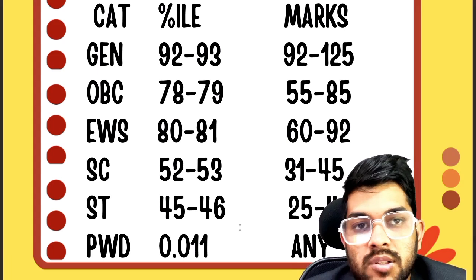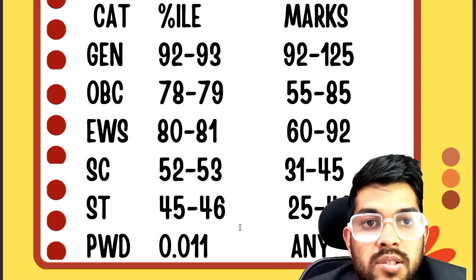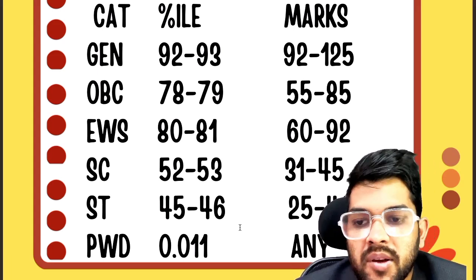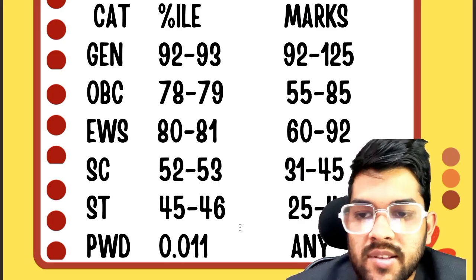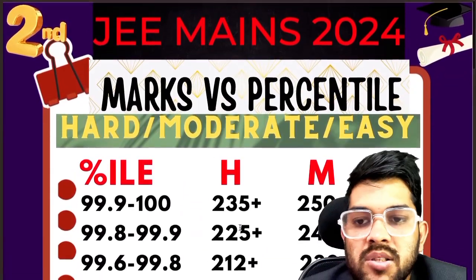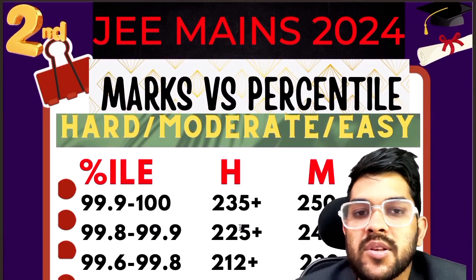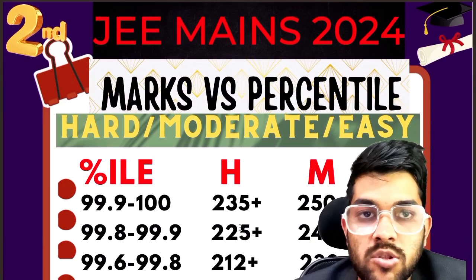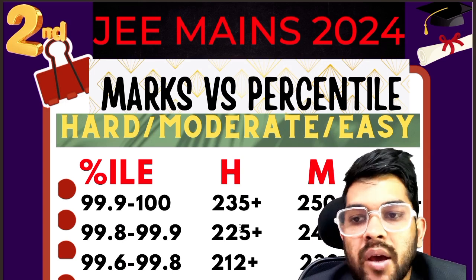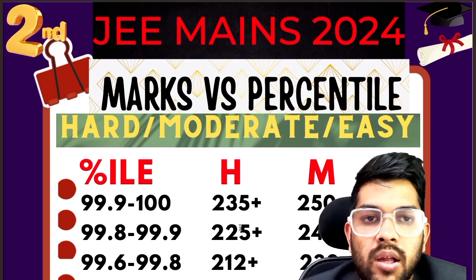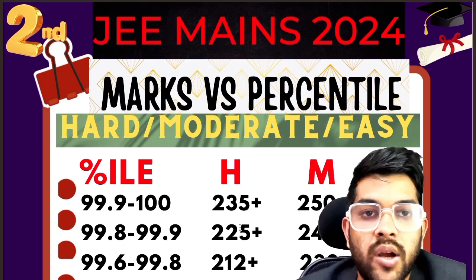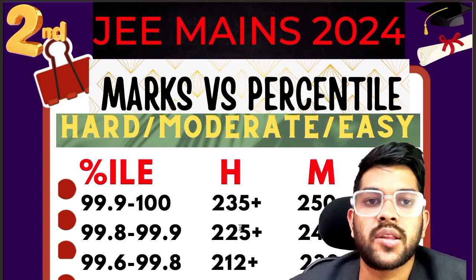If you could not reach the center in the first attempt, you can do so in the second attempt and qualify for JEE Advanced. This was the complete information regarding marks versus percentile for the second attempt of JEE Mains. Please subscribe to the channel, and if you find my guidance useful, you can register as it will help you select the best college and get the best results in every entrance exam. Thank you.